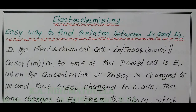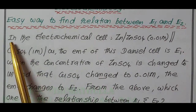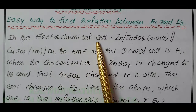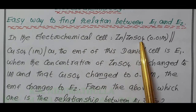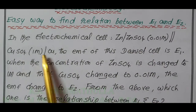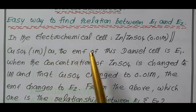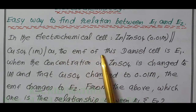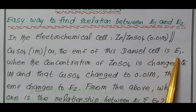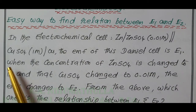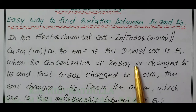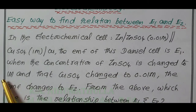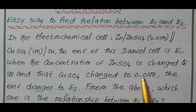The problem given is: in the electrochemical cell, zinc | zinc sulfate || copper sulfate | copper — nothing but the Daniel cell. The EMF of this Daniel cell is E1. When the concentration of zinc sulfate is changed to 1M, and that for copper sulfate changed to 0.01M, the EMF changes to E2.